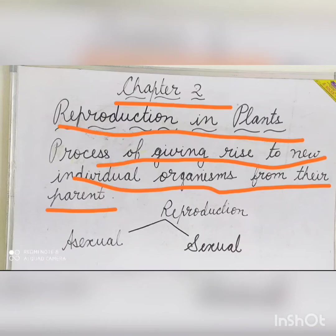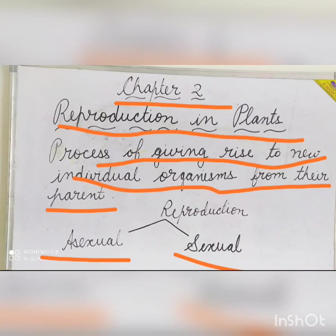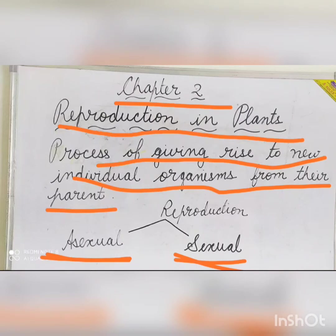There are two basic modes of reproduction in plants. One is asexual reproduction and the next is sexual reproduction. In sexual reproduction, both the female and the male gametes are involved. In asexual reproduction, there is no involvement of gametes. Sexual reproduction is common in flowering plants whereas most of the lower plants reproduce asexually.